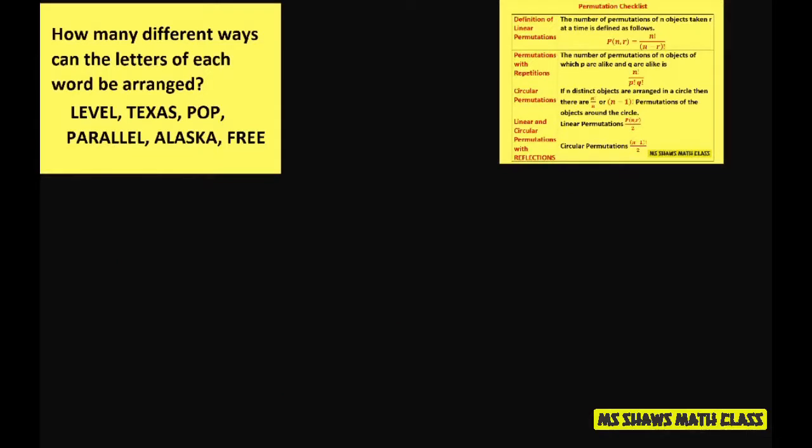Now let's look at Alaska. So for Alaska, we have 1, 2, 3, 4, 5, 6, 6 total letters. We have 3 A's, 1 L, 1 S, and 1 K.